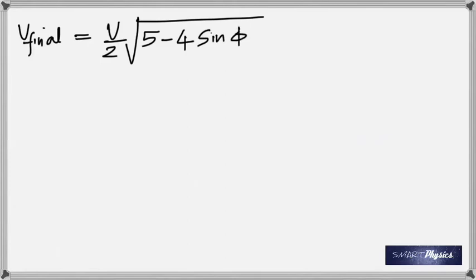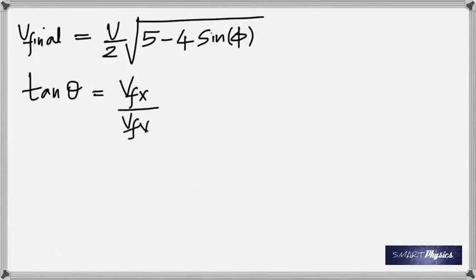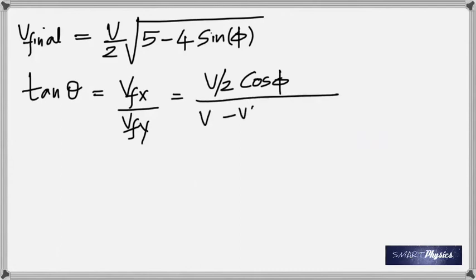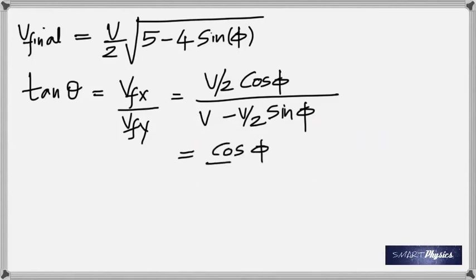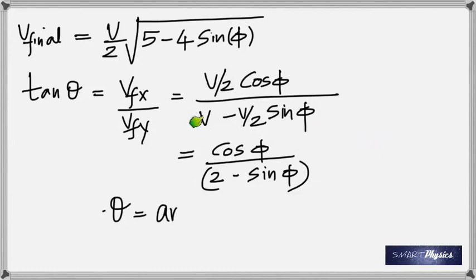To find angle theta, recall that tan θ = opposite/adjacent, which here is the x-component divided by the y-component. So tan θ = (v/2 cos φ) / (v − v/2 sin φ). Dividing numerator and denominator by v/2 simplifies this to cos φ / (2 − sin φ). Therefore theta = arctan(cos φ / (2 − sin φ)).